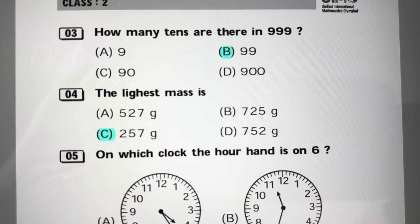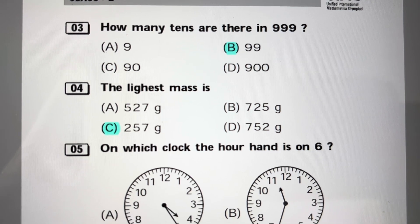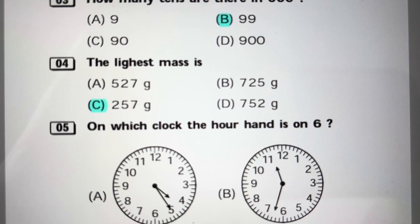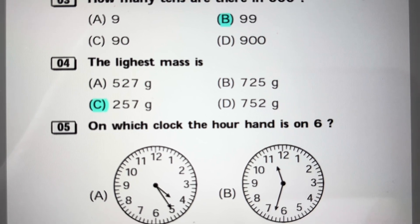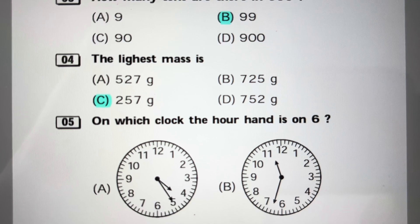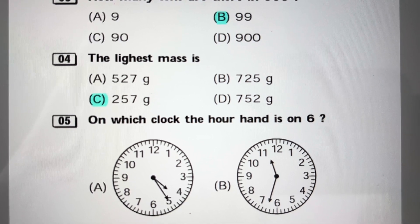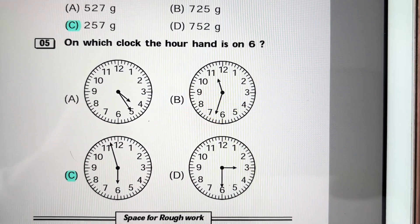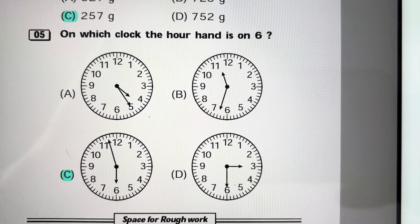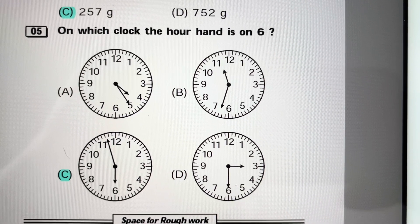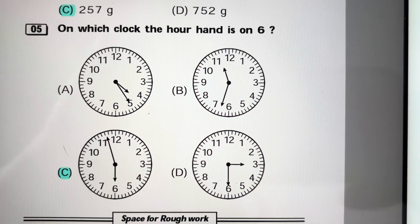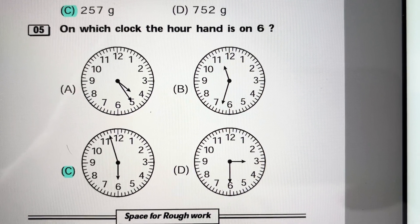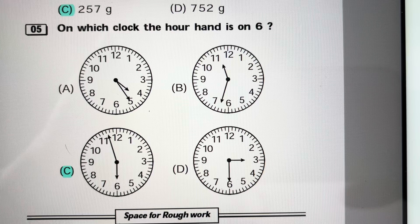The lightest mass is: 527 grams, 725 grams, 257 grams, and 752 grams. The lightest mass is 257 grams. Answer is C. On which clock is the hour hand at 6? You can see that in C the hour hand is almost at 6, so the answer is C. In the others it is not at 6 or near 6.